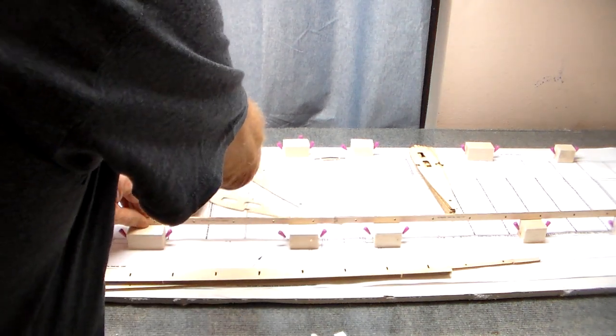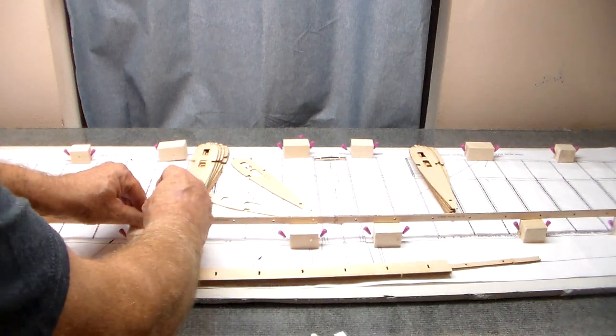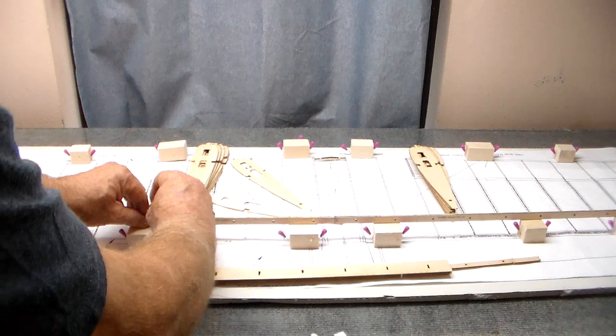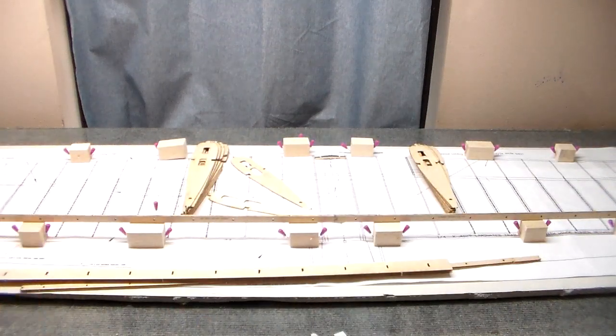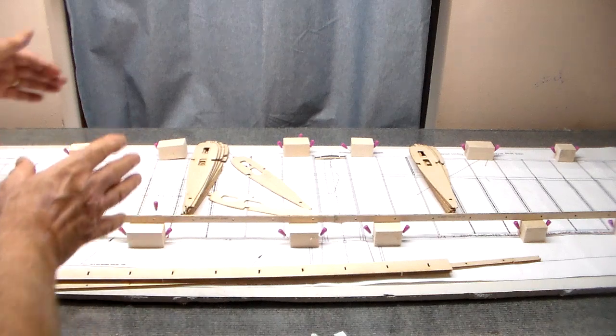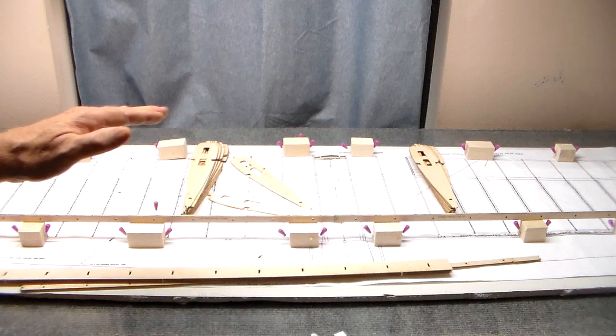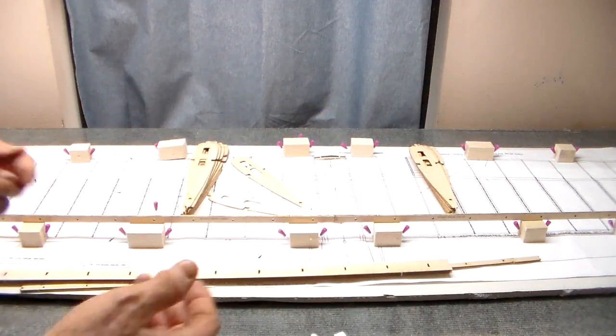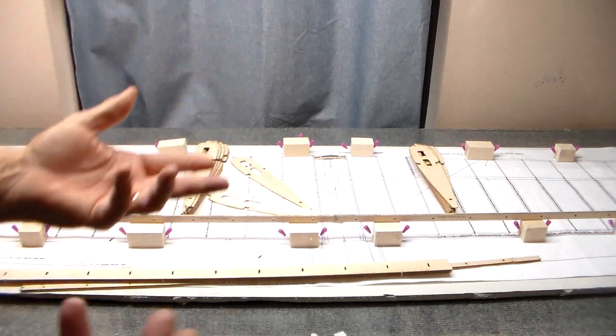You bring it to the front edge of the blocks like this. You take a pin, can you see this okay, and you just pin this down to the block straight up and down. You do that all the way up and down, set your ribs in. You may have to adjust these blocks a little bit, but everything's the same height and perfectly level.